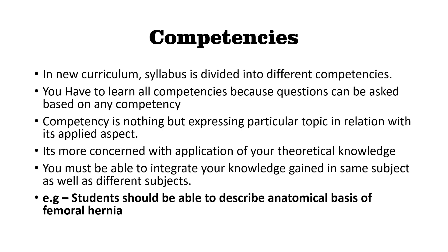So here the competency is: students should be able to describe the anatomical basis of femoral hernia. What is changed? The anatomy is the same, but the pattern of the question asked is changed. In the exam, you will not get a question on femoral sheath; you will get a question on femoral hernia, in which you have to write the anatomy of the femoral sheath and what happens in femoral hernia. A detailed list of all competencies included in all three subjects is given in the description in PDF form — you can download it and read it.